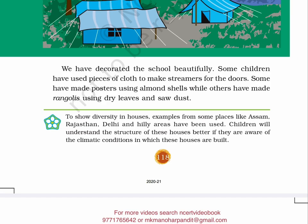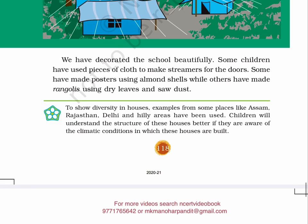Note: To show diversity in houses, examples from some places like Assam, Rajasthan, Delhi and hilly areas have been used. Children will understand the structure of these houses better if they are aware of the climatic conditions in which these houses are built.